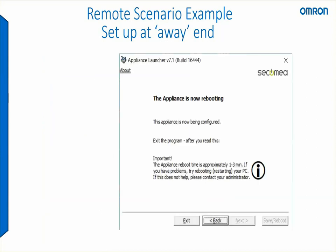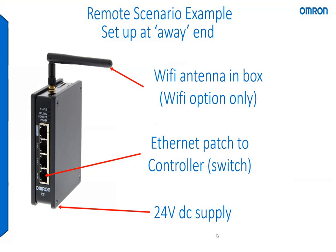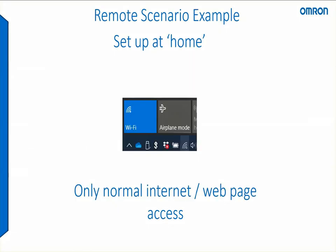Clicking next takes you to the final dialog window in the wizard. The appliance should reboot and a connection will be established up to the cloud. You can see how I have the site manager set up locally — I've added the Wi-Fi antenna which came in the box, plugged in an Ethernet patch cable directly to my machine via a switch, and added a 24-volt DC supply. Pretty much all you need for the setup at the home end is normal internet access.